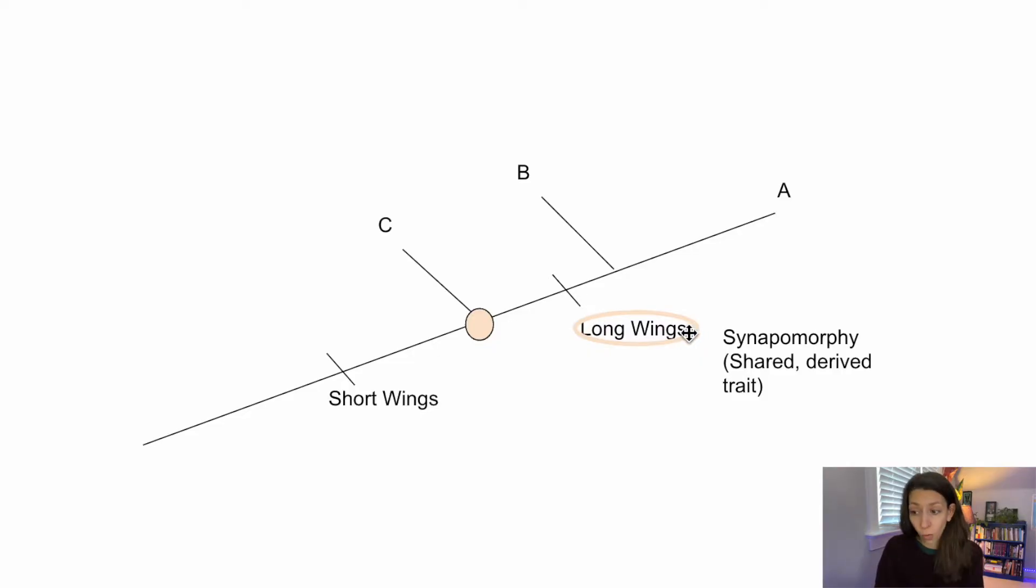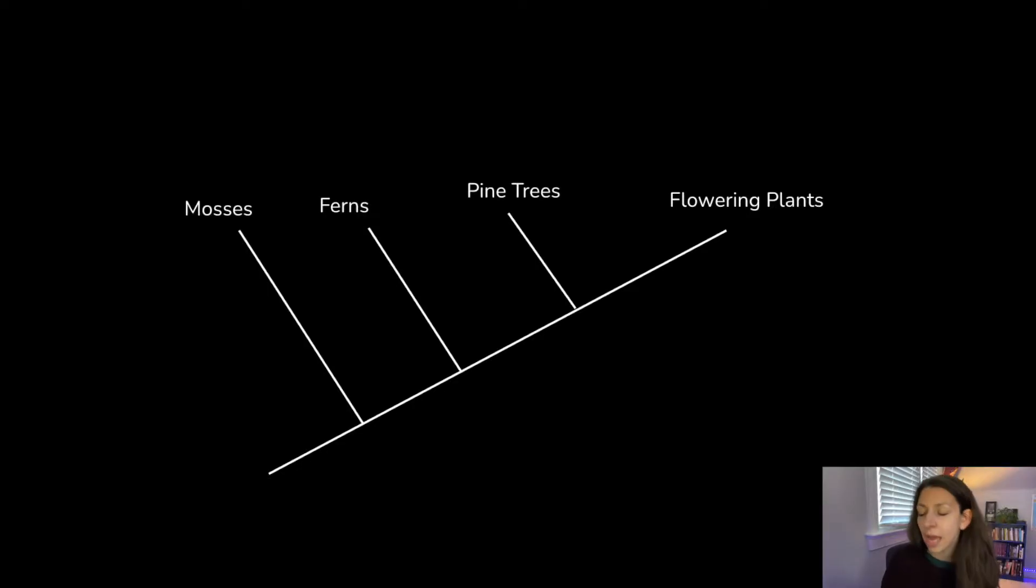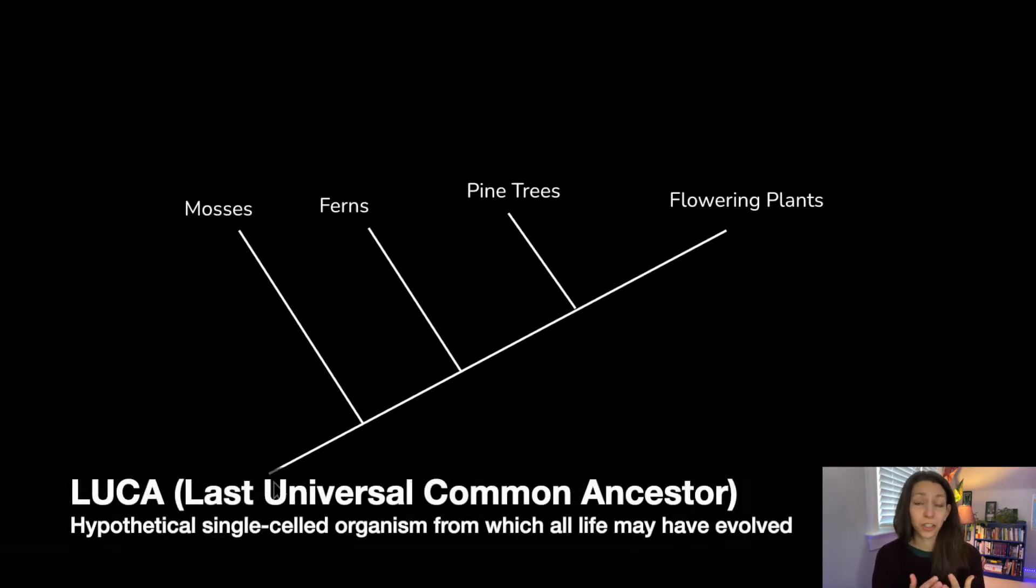For example, on these ones, long wings is a trait that both species B and A have, but species C does not have. A lot of these times these trees will be rooted. And what that means is there's going to be this sort of continuing branch or part of the tree, and it's actually the root of the tree. And that is in reference to LUCA or the last universal common ancestor, which we think all living things share.